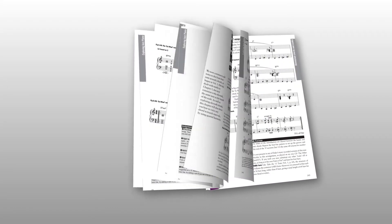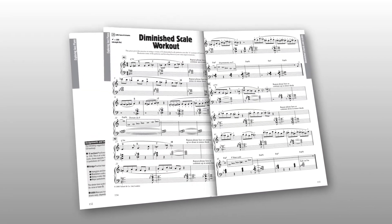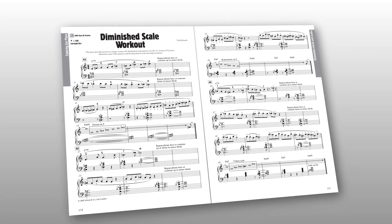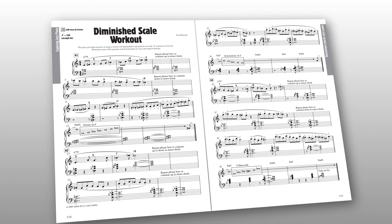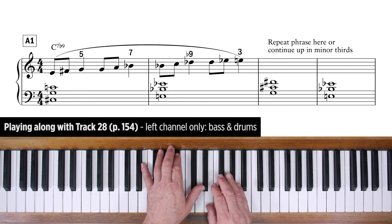There's a track on the volume 2 CD expressly designed to help you practice the ideas in this clip. Track 28, page 154, Diminished Scale Workout. You'll be given 12 bars on a C7 chord, followed by 4 bars on F minor. I'll silence the piano on the play along and demonstrate some of the licks we've been talking about. They're all written down in the book, but I won't stick exactly to the notation, because after all, this is supposed to be an improvisation.